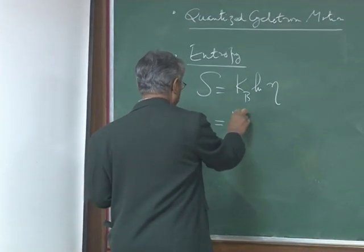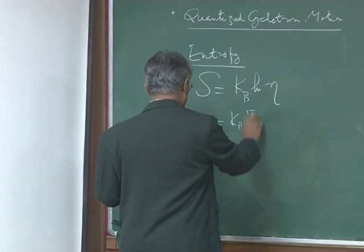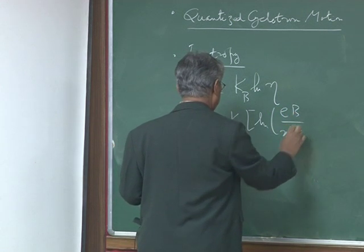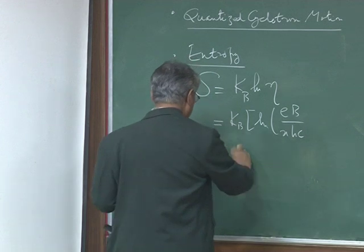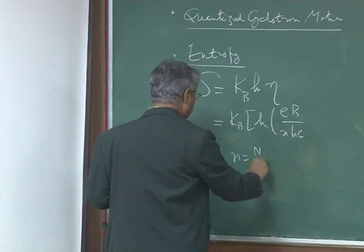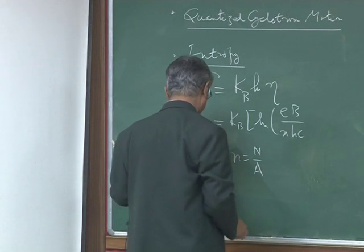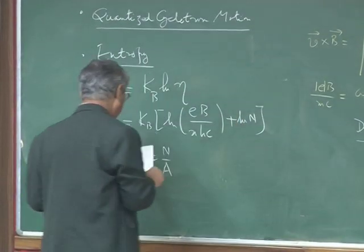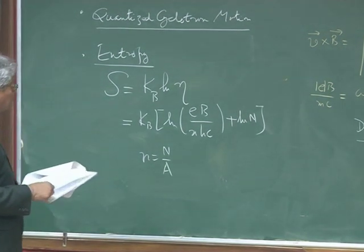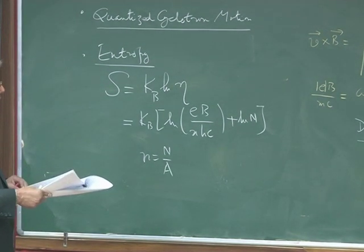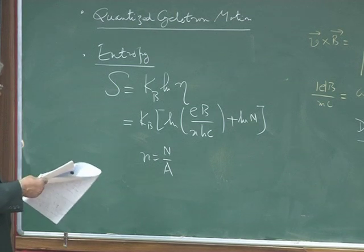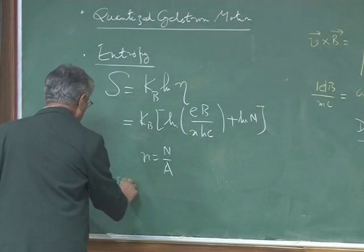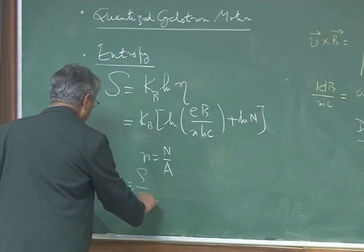So what is entropy? Entropy S is k Boltzmann times the log of the degeneracy. That's what quantum mechanics tells us. So it's log eta. And so now you get Kb log of, you put that stuff in, eBA over Nmc, where N is the number of electrons powering in A area, plus log N.